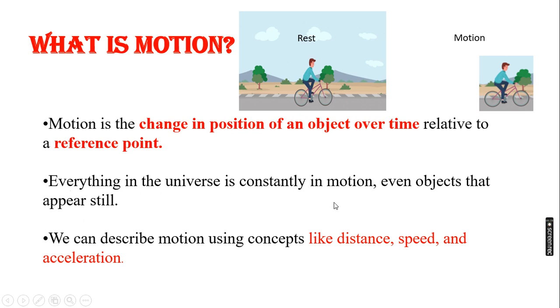Everything in the universe is constantly in motion. So in the universe, all things in our surroundings are in motion. The things that we are seeing, like steel, that is also in motion because Earth is also in motion. Right?